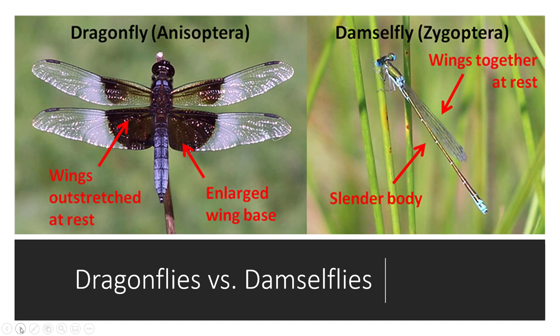A dragonfly when it's at rest will rest with its wings outstretched. A damselfly at rest will rest with its wings folded over its back. The dragonfly is also quite a bit more bulky and the damselfly is thinner with a more slender body. The way that the dragonfly holds its wings out, making it a much bigger object and easier prey to grab onto, tells us that it is an older organism than damselflies. Damselflies are believed to have evolved from a common ancestor later than the dragonflies did.